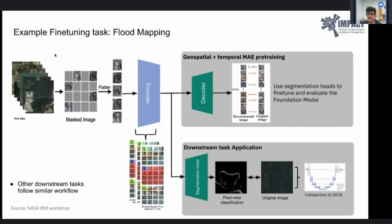The Prithvi foundation model is based on the Masked Autoencoder (MAE) architecture with 3D convolutions. It uses HLS data with six bands — red, green, blue, NIR, SWIR1, and SWIR2 — at 224 by 224 pixels. 75 percent of the image is masked out, fed to an encoder, and the decoder has one job: predict the masked regions. The L1 loss is calculated and the model learns from this. Three input time steps T0, T1, T2 are used with preprocessing including cloud removal.